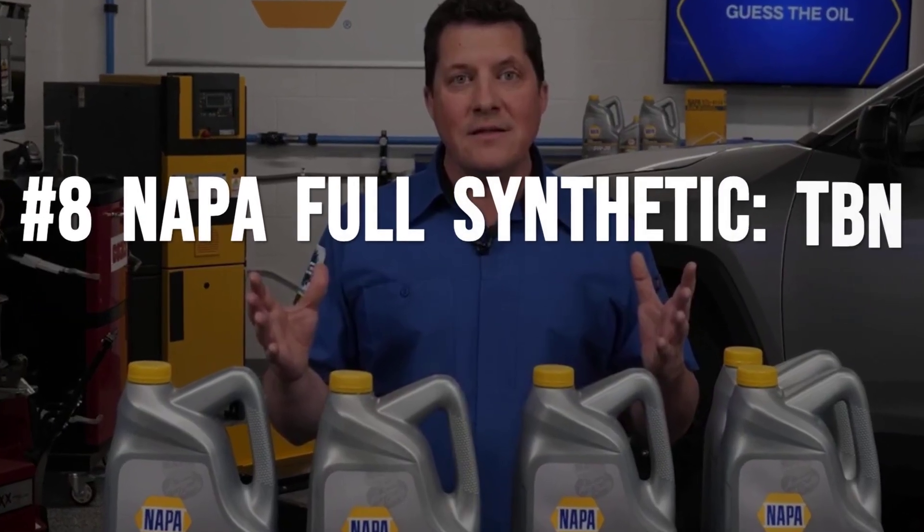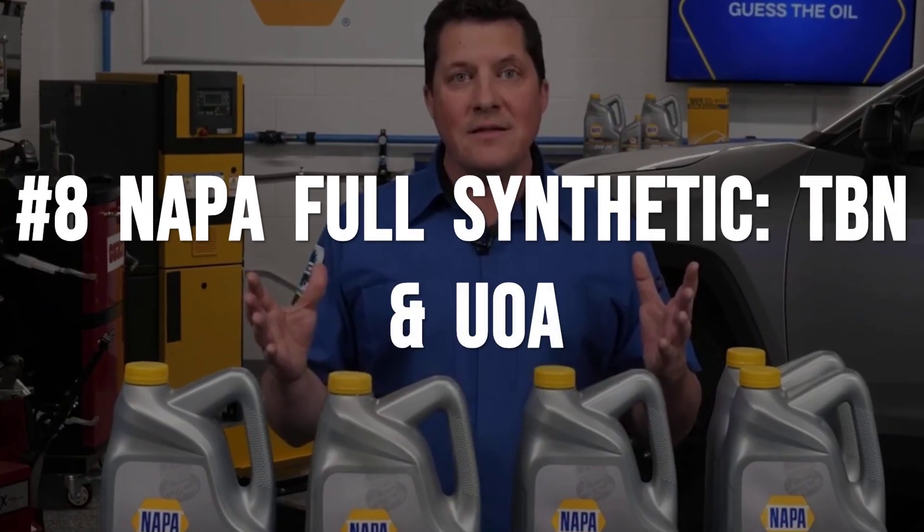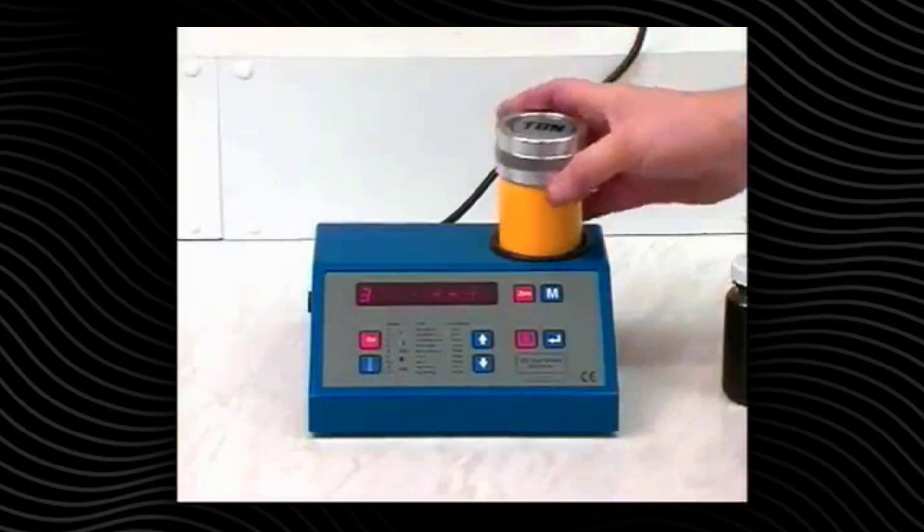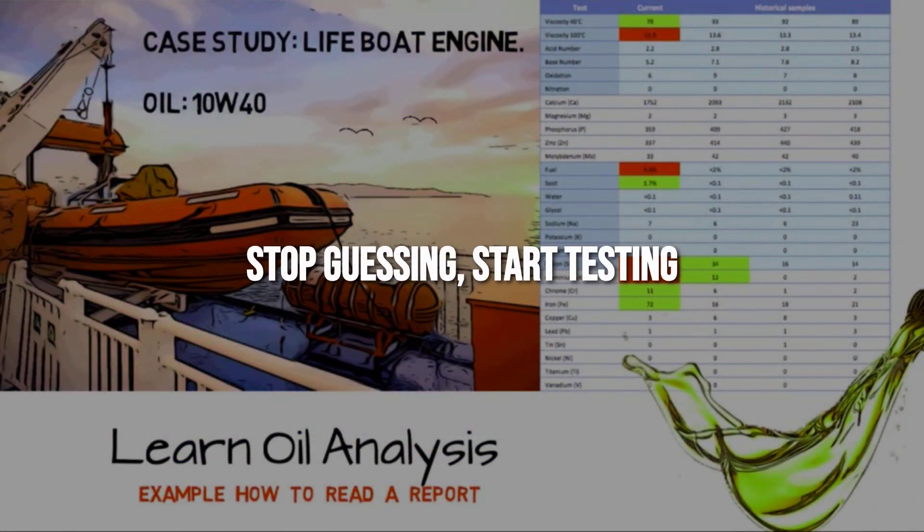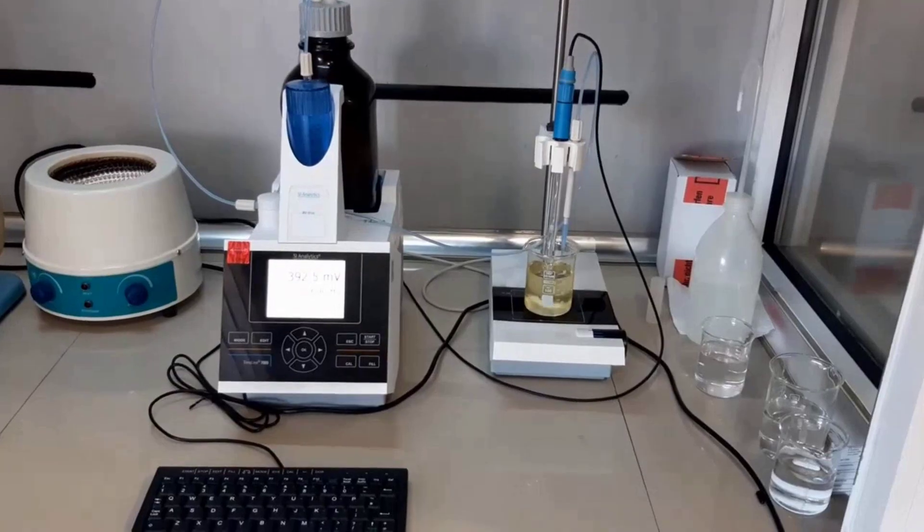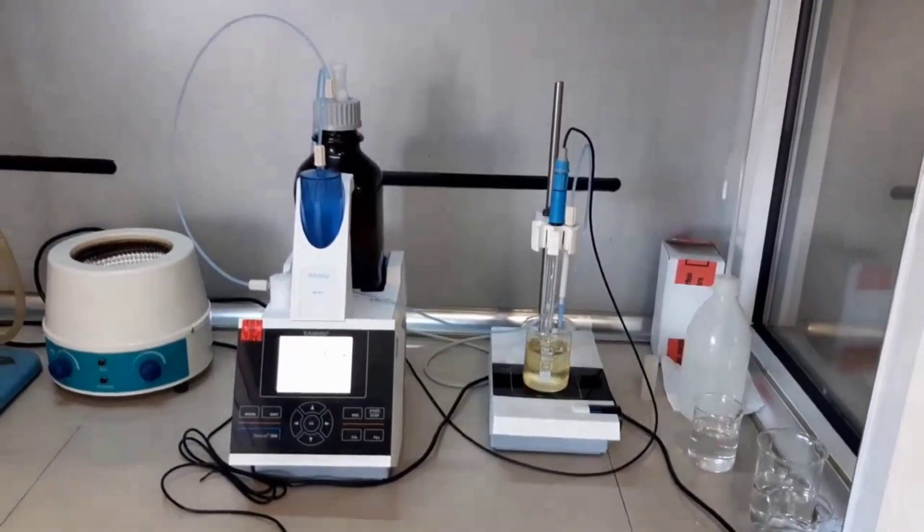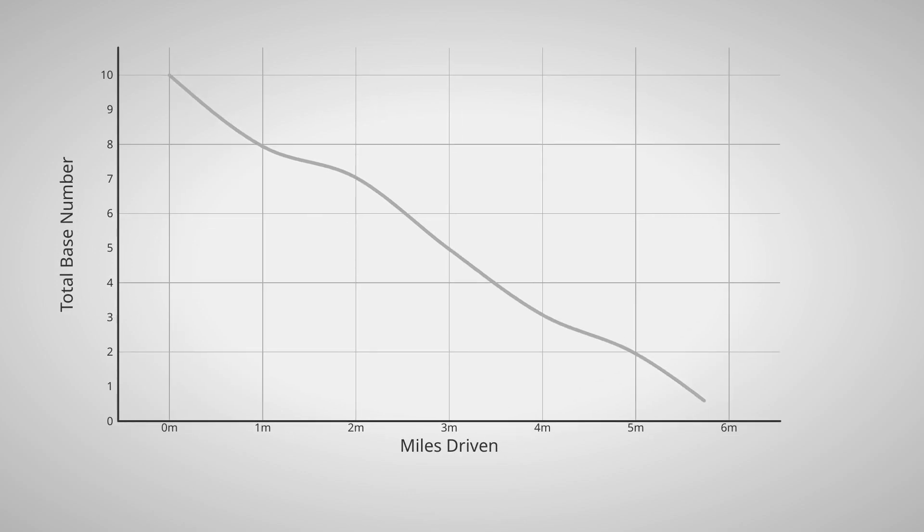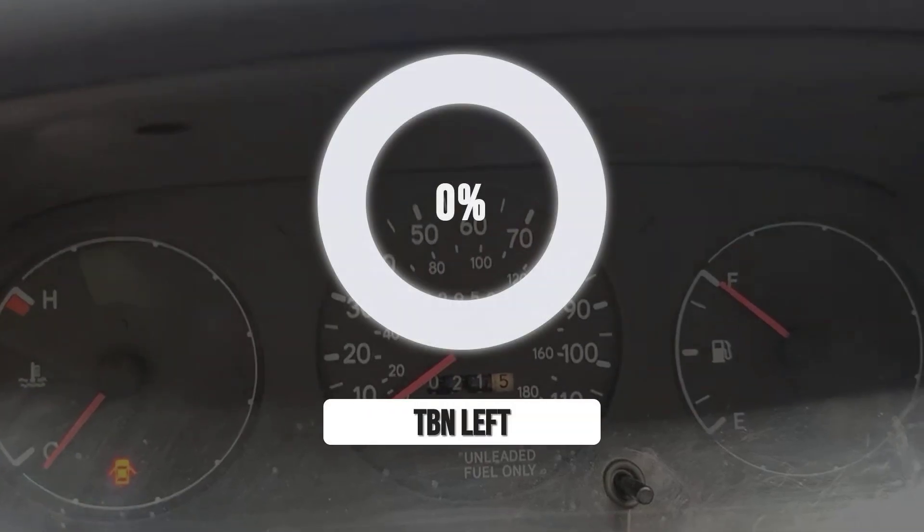NAPA full synthetic stands out not just for its price, but for giving drivers a real tool to track engine health. It provides additive reserve monitoring. Total base number, abbreviated TBN, tells you how much acid neutralizing power your oil has left.